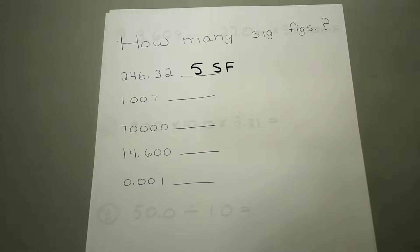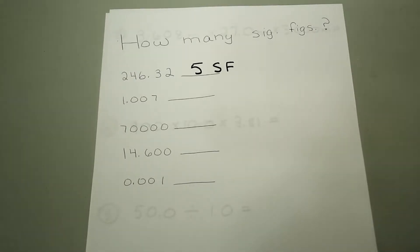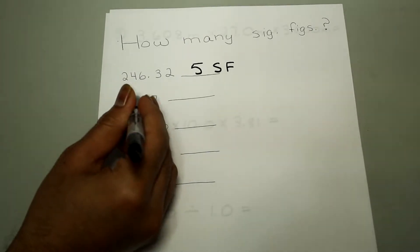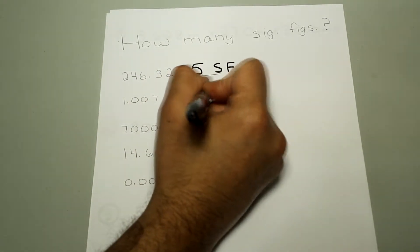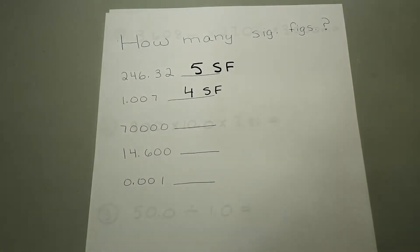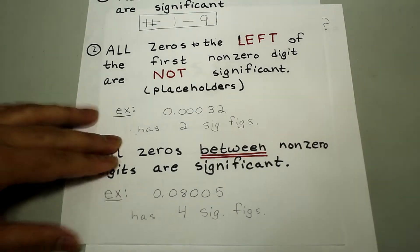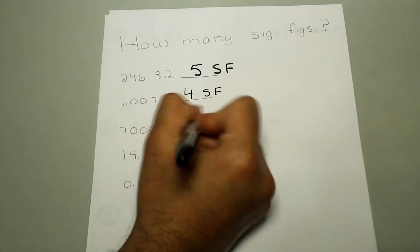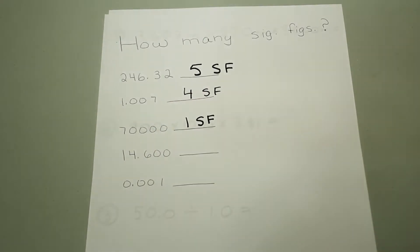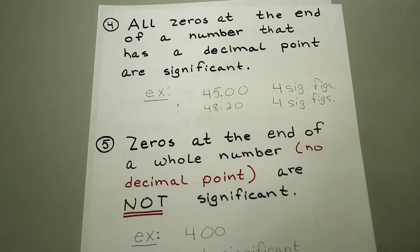The next one, 1.007, has four significant figures. That's because zeros in between non-zero digits are also significant. The next one, 700, only has one significant figure. That's because zeros at the end of a whole number without a decimal point are not significant.